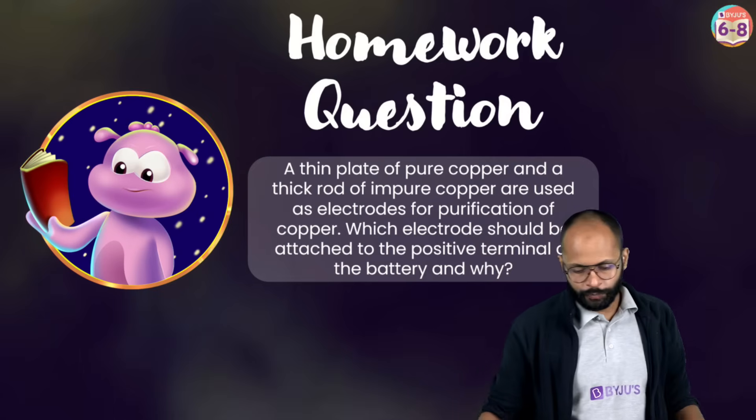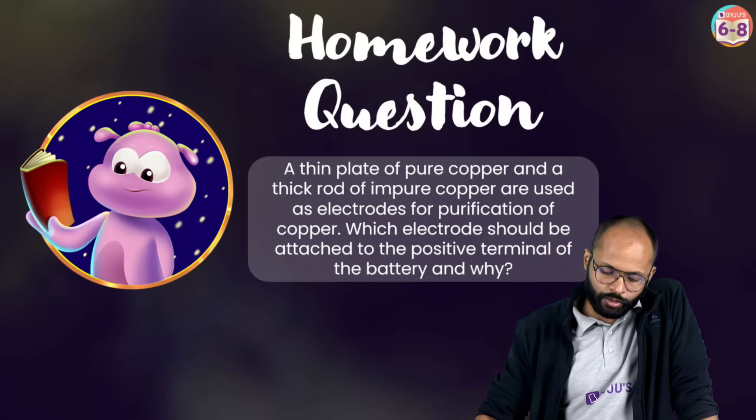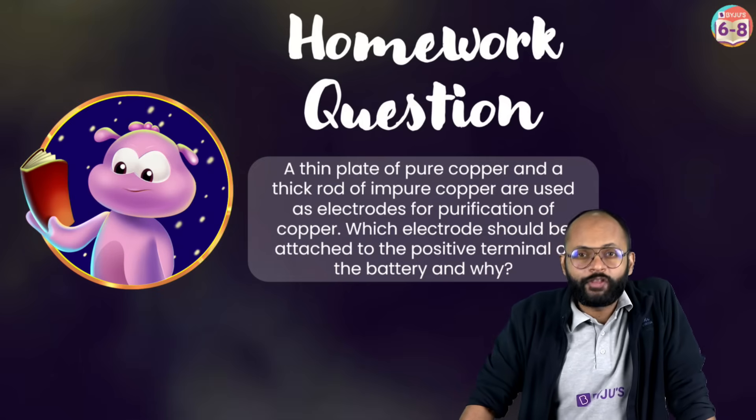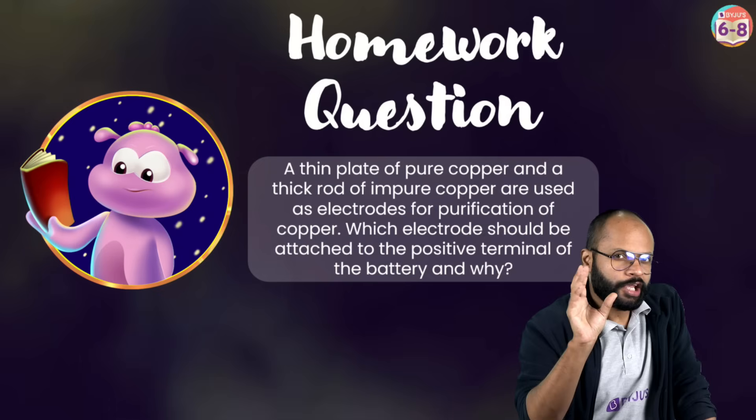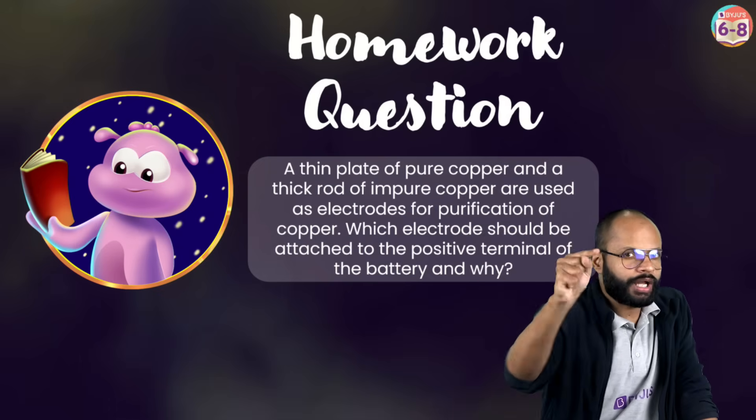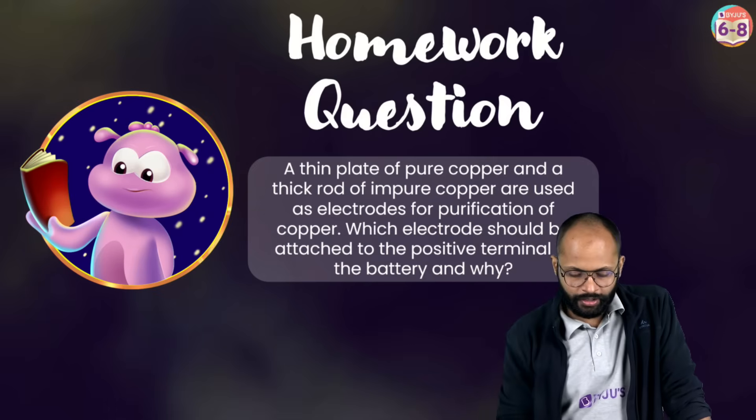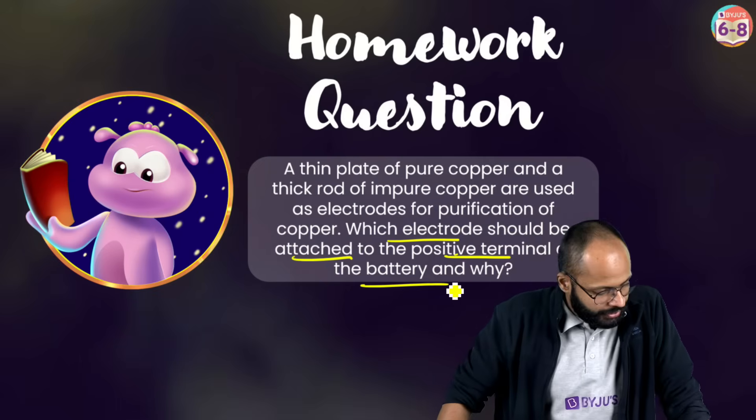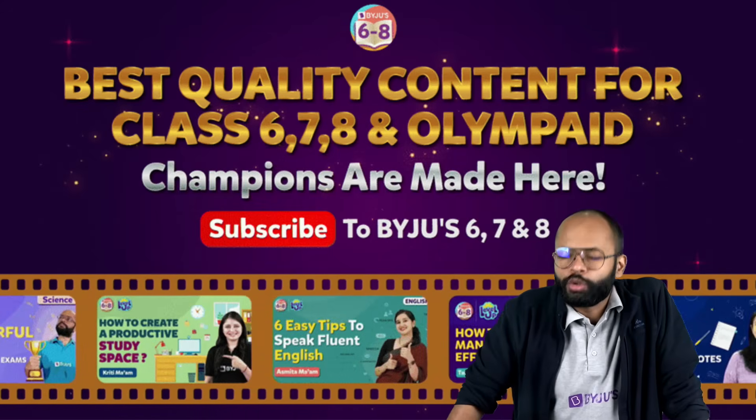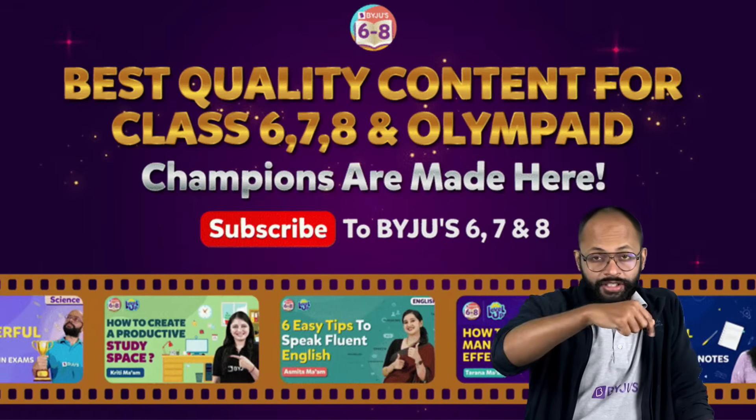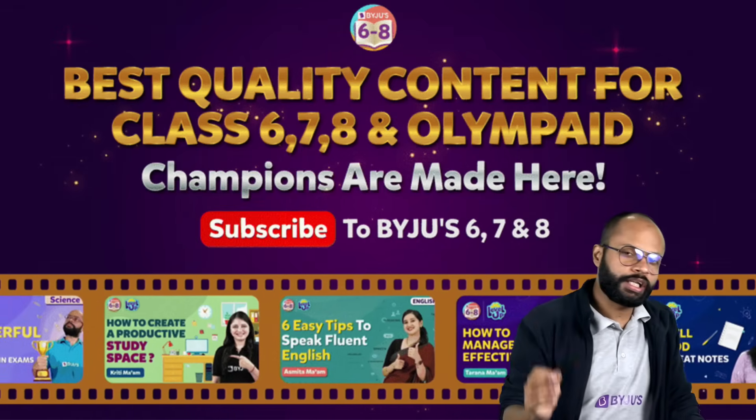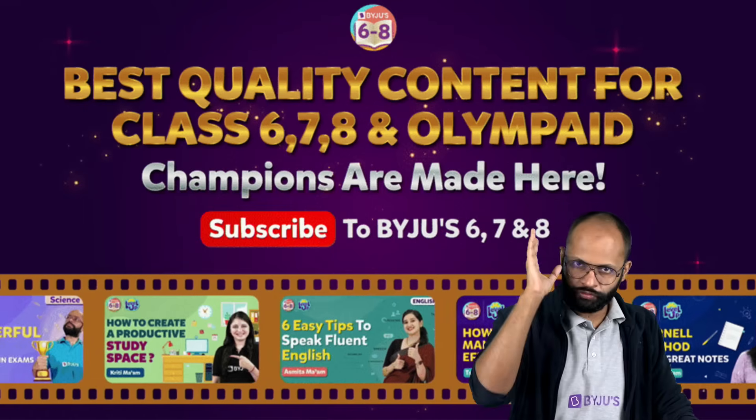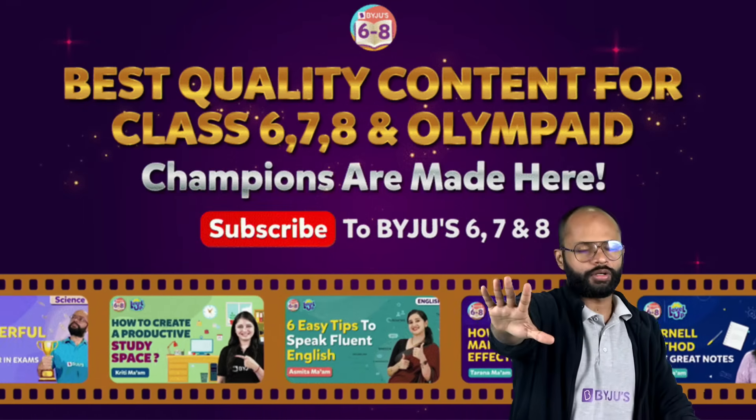Quickly, a homework question for you. A thin plate of pure copper and a thick rod of impure copper are used as electrodes for purification of copper. I know I haven't taught this in this, but I have taught this in classes. And this is something, if you know electroplating, if you know what leaves and where does it deposit, then you can answer this question. So try well. Which electrode should be attached to the positive terminal of the battery and why? Answers in the comments. And people, as I promised, I'll tell you two very important things which you have in the description. One, you have a link which contains notes of this chapter and important exam questions of this chapter in the description. This is for you. These are PDFs. These are downloadable. All yours.